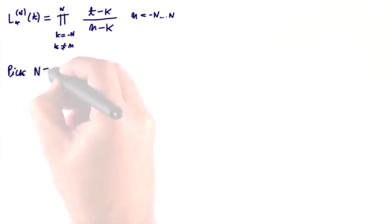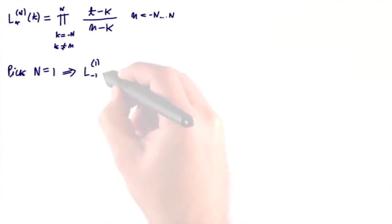Pick capital N equals 1, so we have three polynomials: l minus 1, l 0, and l 1.